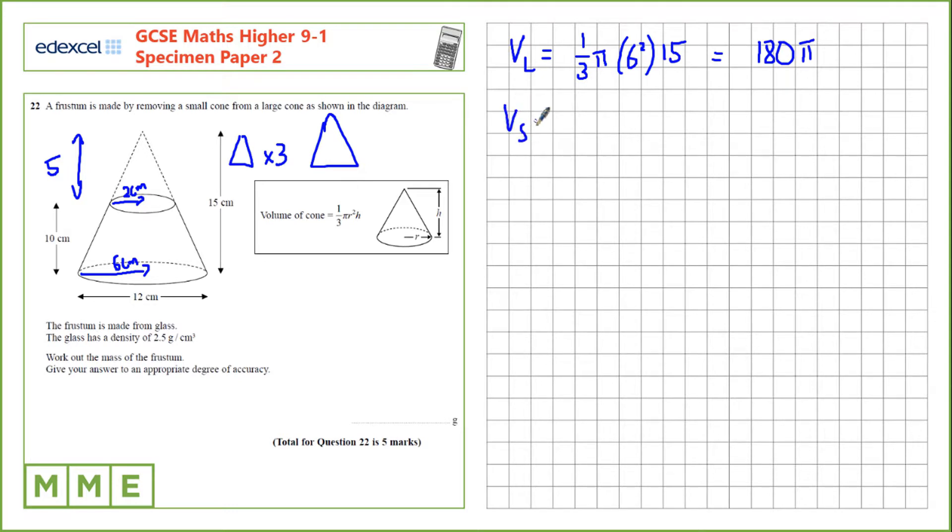If you want the volume of the small cone, we can either use the formula here or we can use the scale factor here. If we're using the scale factor, we take the volume of the large cone and divide by the scale factor cubed. If we want to find the volume scale factor for anything, we take the length scale factor and cube it. That's 180 pi over 27.